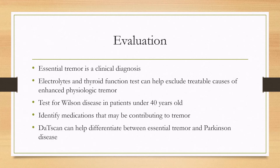For evaluation, essential tremor is going to be a clinical diagnosis for most clinicians, although some specialized centers can analyze videos of tremors to differentiate them. If the disease is suspected, electrolytes and a thyroid function test can be sent to help exclude treatable causes of enhanced physiologic tremor, which can also coexist with essential tremor. For anyone under age 40, testing for Wilson's disease can be indicated.